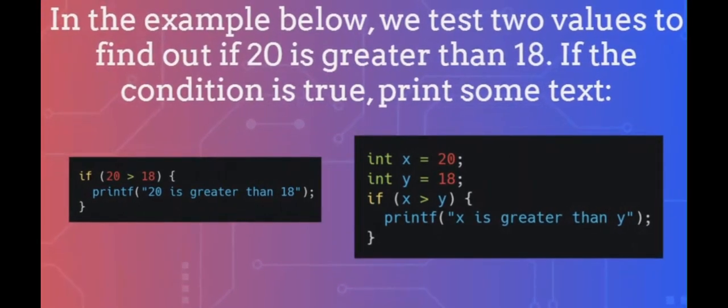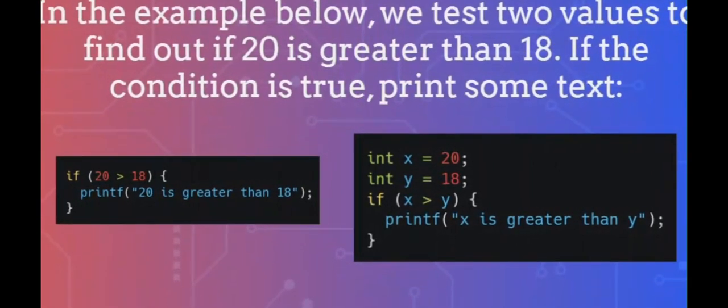In the example below, we test two values to find out if 20 is greater than 18. If the condition is true, print some text. In this example, we use two variables, x and y, to test whether x is greater than y using the greater than operator. As x is 20 and y is 18, and we know that 20 is greater than 18, we print to the screen that x is greater than y.